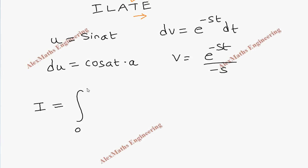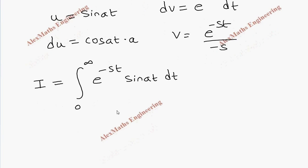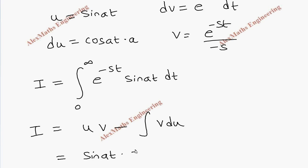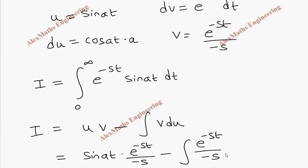Let's name the original integration as I, that is I = integral from 0 to infinity of e^(-st) * sin(at) dt. Applying the integration by parts formula uv - ∫v du, we substitute u = sin(at), v = e^(-st)/(-s), and du = a*cos(at) dt, so we write the dt at the end as well.